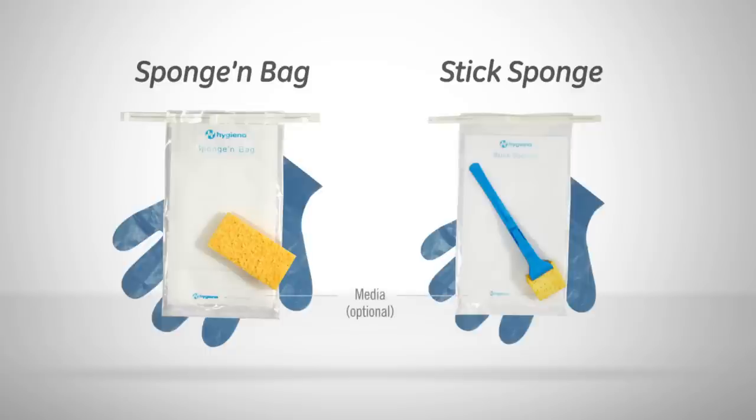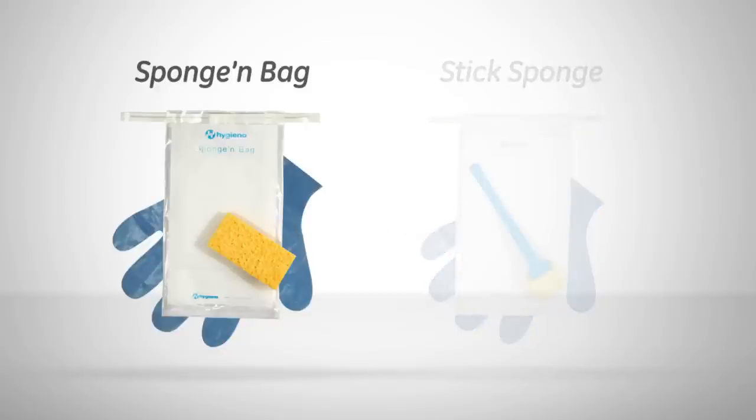Sponges may be ordered dry or pre-moistened with a variety of different diluents and with or without gloves. Sponge and bag is a simple and convenient device for collecting environmental samples from large surface areas.